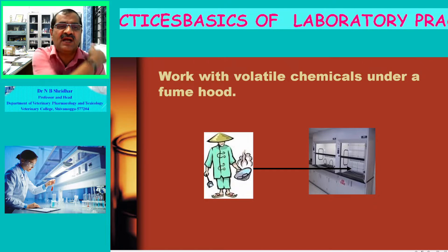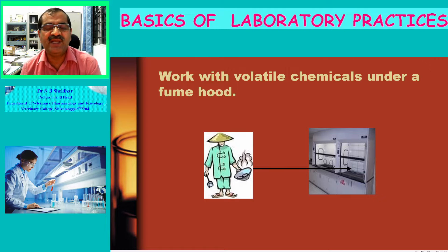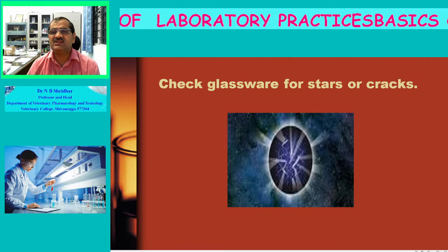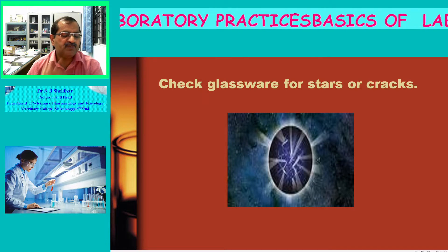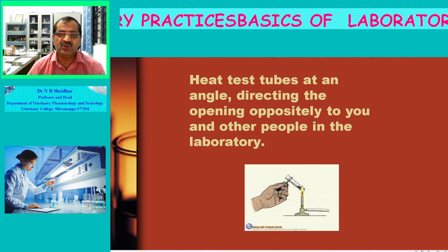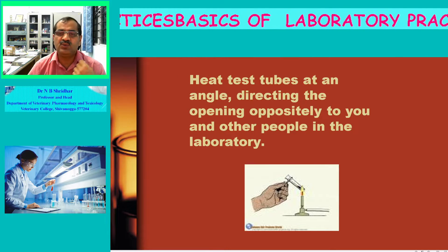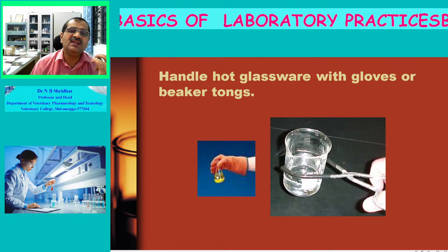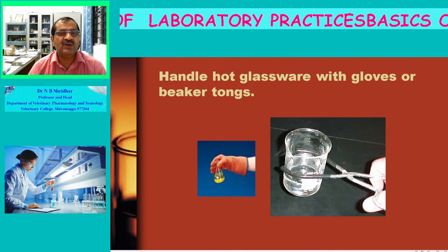Work with volatile chemicals under a fume hood only — never use open areas for volatile chemicals. Check glassware for tears or cracks, as leaks may lead to spills of acid or alkalis. Heat test tubes at an angle, directing the opening away from yourself and other people in the laboratory to prevent spattering. Handle hot glassware only with gloves or appropriate beaker tongs.